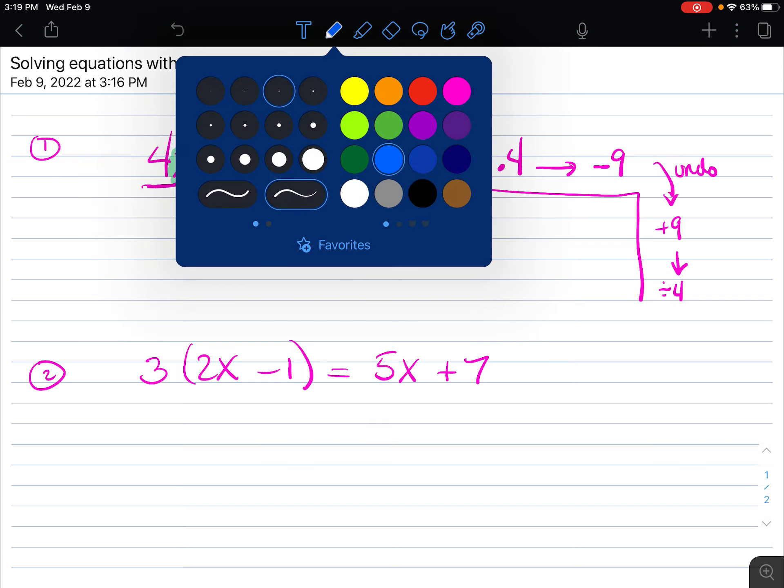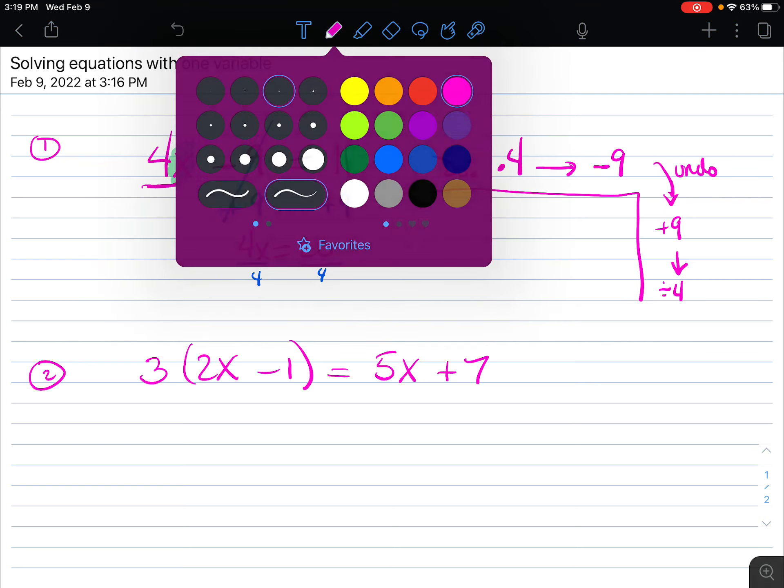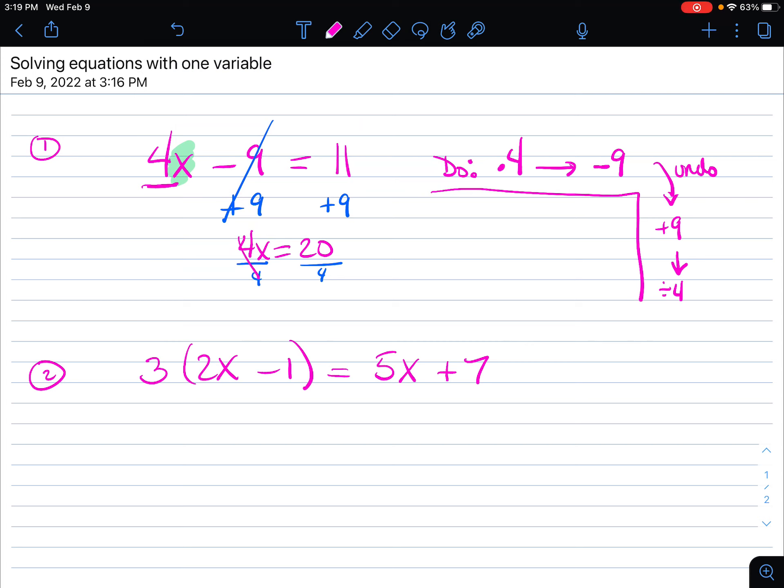The next step said to divide both sides by 4. And so we cancel. And x equals 5.